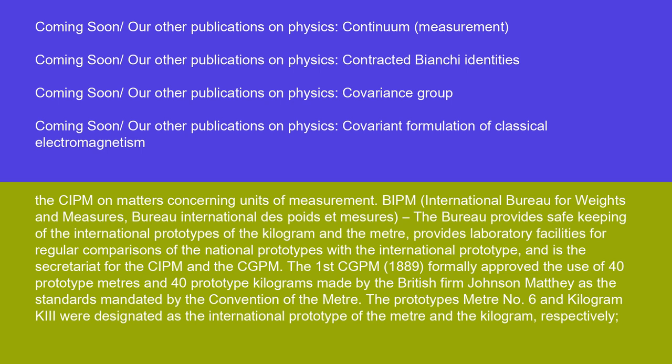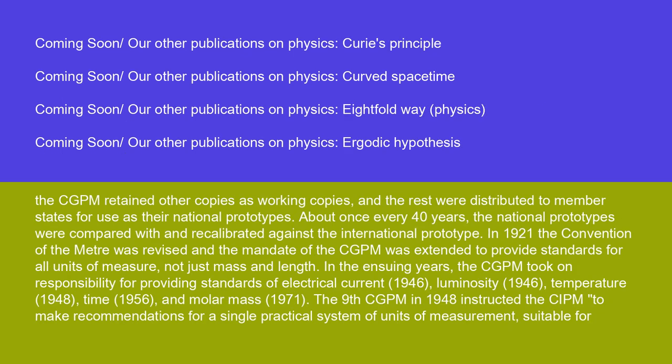The first CGPM in 1889 formally approved the use of 40 prototype meters and 40 prototype kilograms made by the British firm Johnson Matthey as the standards mandated by the Convention of the Meter. Prototype Meter No. 6 and Kilogram K II were designated as the international prototype of the meter and the kilogram, respectively. The CGPM retained other copies as working copies, and the rest were distributed to member states for use as their national prototypes. About once every 40 years, the national prototypes were compared with and recalibrated against the international prototype.